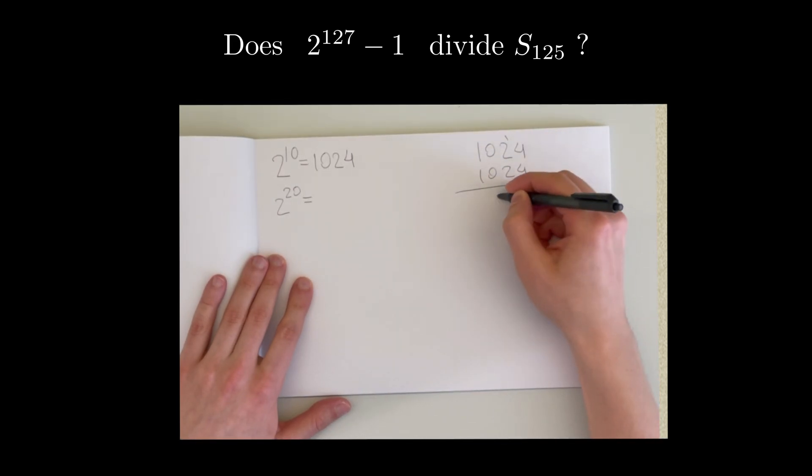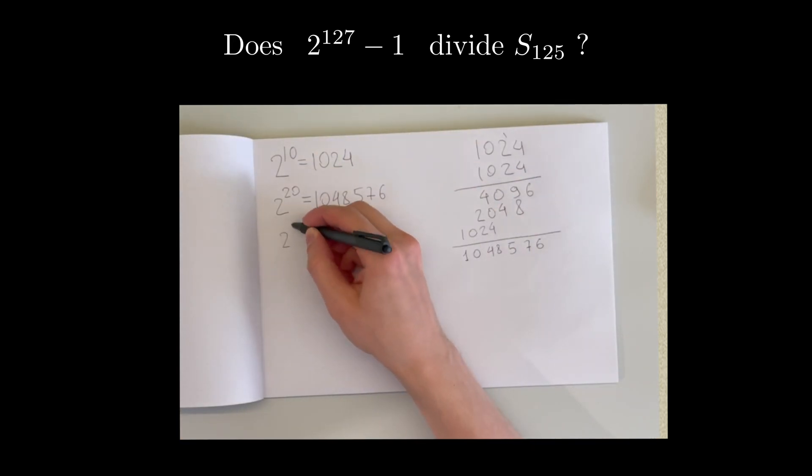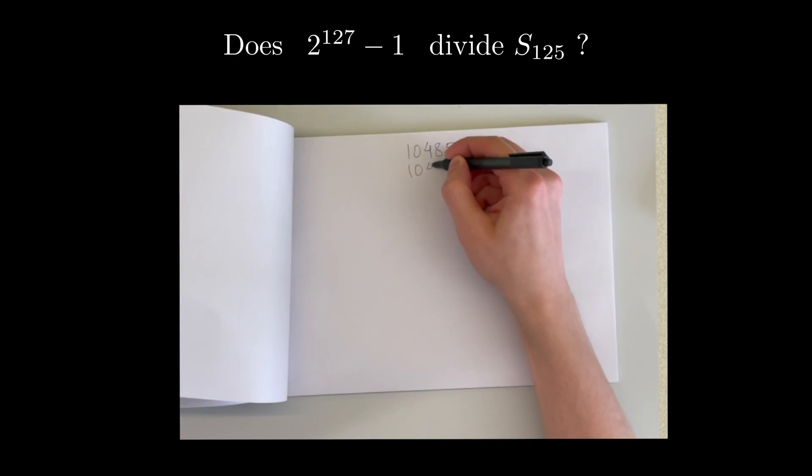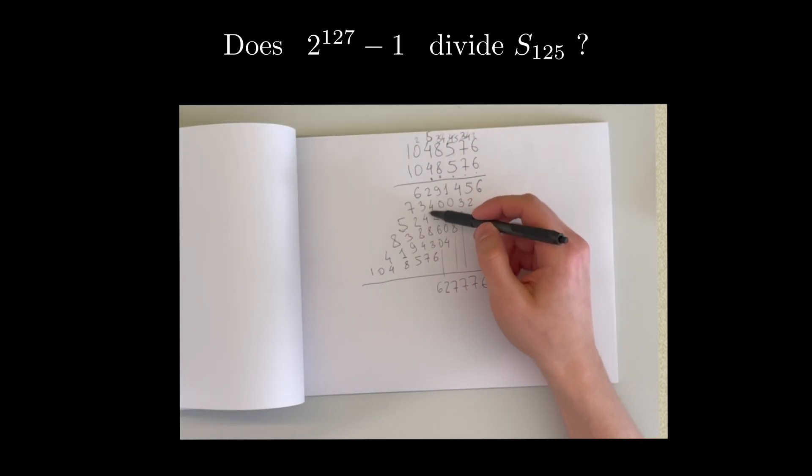I even sat down and tried to do it by hand. It took me around 8 minutes just to get up to 2^40. I think that calculating both numbers and dividing them must take several weeks. And by the way, what if you make a mistake? Was there anyone checking these calculations back in the 19th century?